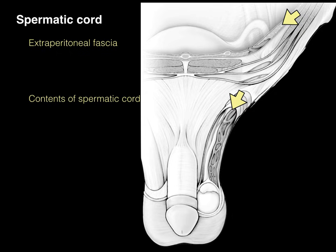The extraperitoneal fascia contains the contents of the spermatic cord, as they're in the same fascial plane. There's the ductus deferens, outlined in yellow — also known as the vas deferens, though ductus deferens is the more accurate term since 'vas' means vessel and this is not a vessel. The ductus deferens transports sperm during ejaculation from the testis, up through the spermatic cord, through the inguinal canal, then back into the ejaculatory duct in the prostate gland, and out the urethra and penis. It has a very thick smooth muscle wall to move sperm at a fast rate.